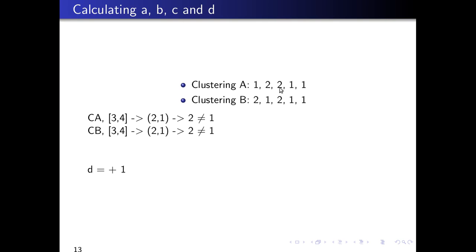Now index three and four corresponds to (2, 1) in cluster A and (2, 1) in cluster B. The pair in cluster A is not equal and the pair in cluster B is not equal. So D increases by one. Index three and five follows the same idea, so we continue. Finally, the last index is four and five. It corresponds to the pair (1, 1) in cluster A and the pair (1, 1) in cluster B. The pair in cluster A is equal and the pair in cluster B is equal. So A increases by one.